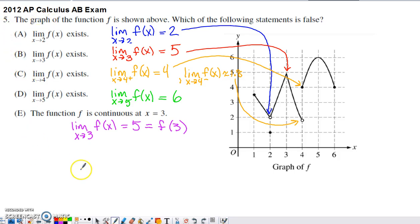This is number 5 from the 2012 AP Calculus exam. In this particular question, they give us this graph here. It's a weird-looking graph with different components - open circles, closed circles in different spots - but pretty typical of something to encounter on the AP Calculus exam.